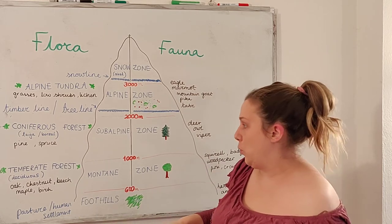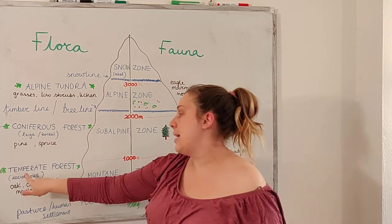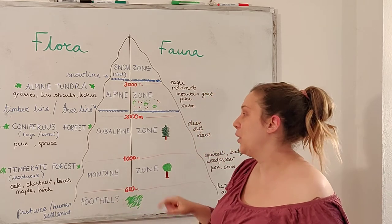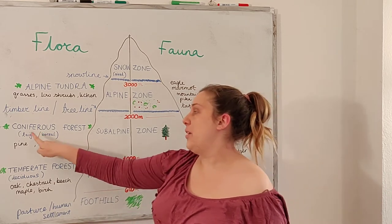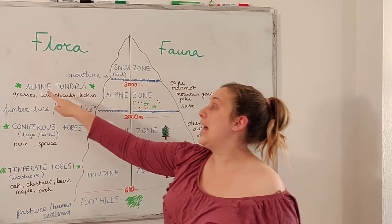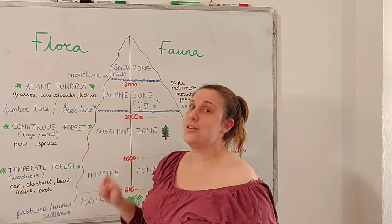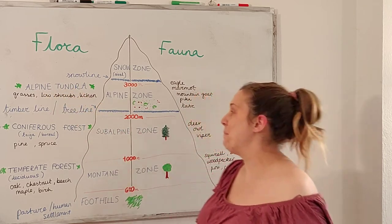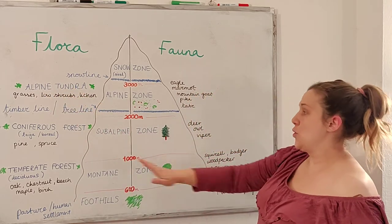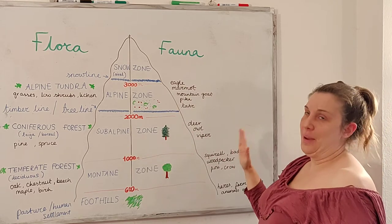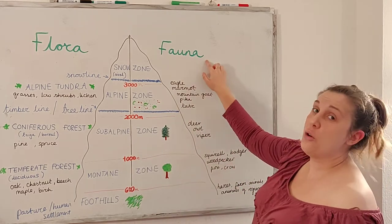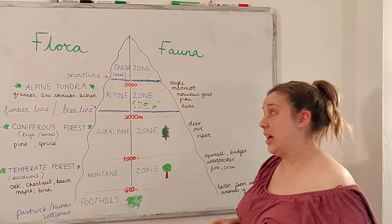Let's repeat the words: temperate forest, coniferous forest, alpine tundra. On the other side of our mountain — fauna. Fauna, we know, is animal life.